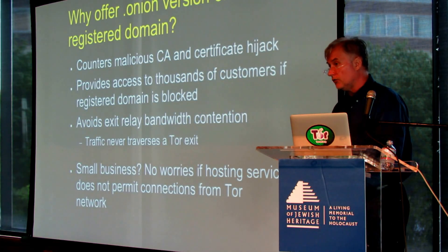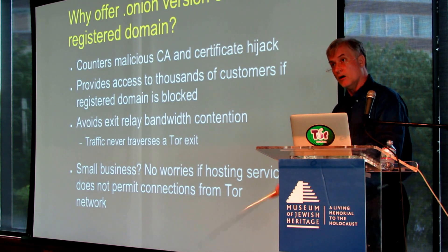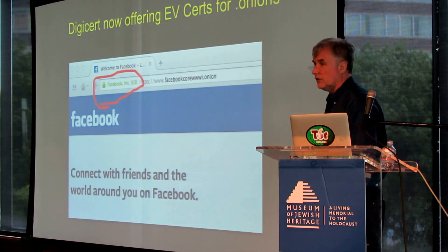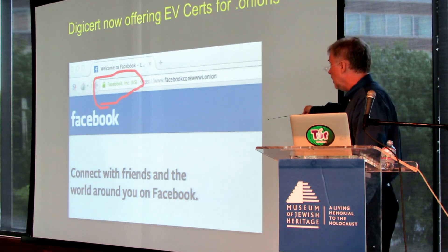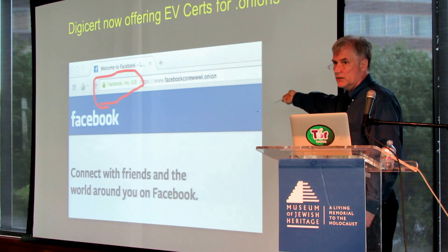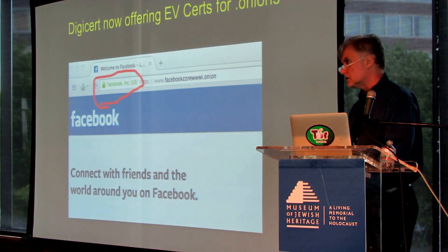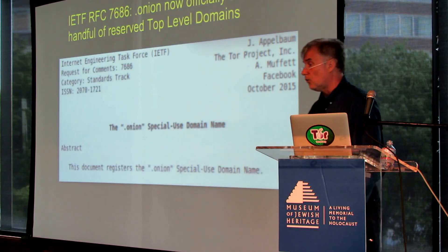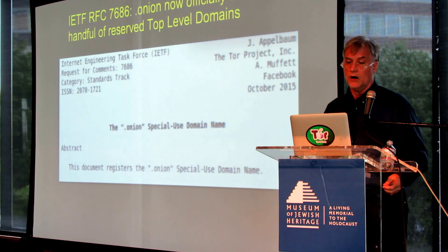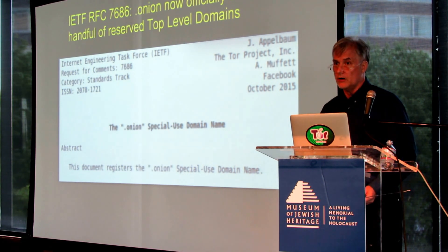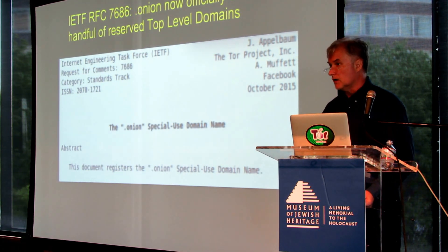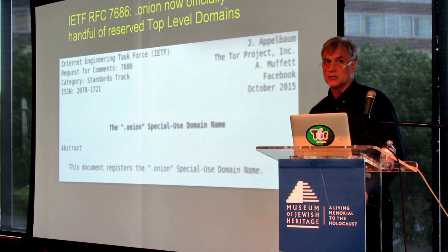You would still like this to dovetail with what people understand about security. DigiCert is now offering certificates — in fact, extended validation certificates — for .onion addresses. That's why you get the little lock icon written for Facebook. Part of the reason this is enabled is because the Internet Engineering Task Force, the group that writes the standards for the protocols that run the Internet, officially approved last October the .onion domain as one of the reserved top-level domains. It's officially sanctioned now by the IETF.